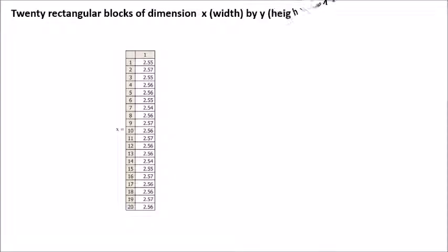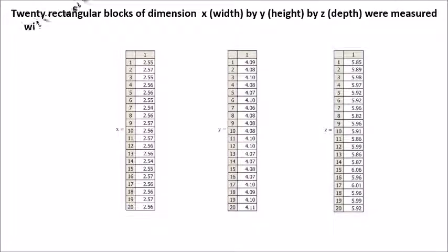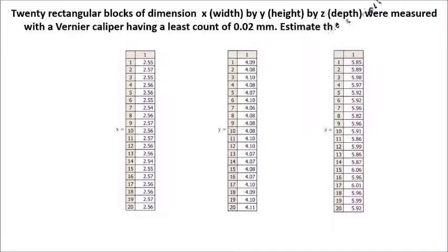20 rectangular blocks of dimension x width, y height, by z depth, were measured with a vernier caliper having a least count of 0.02 mm.